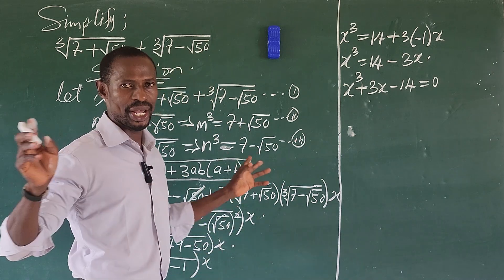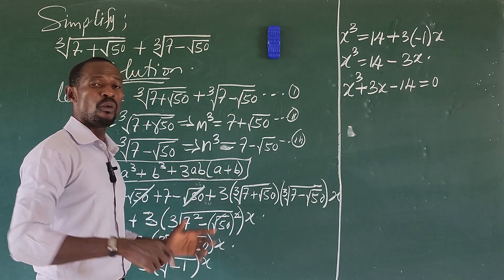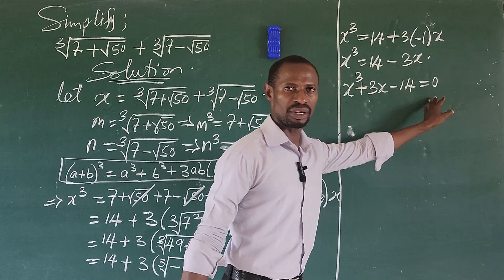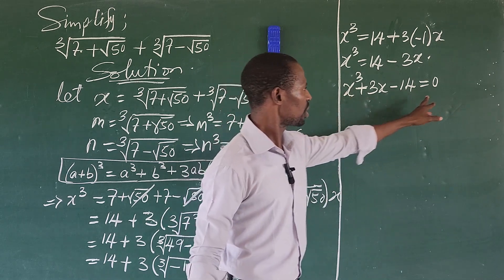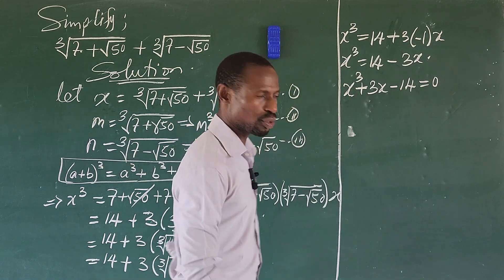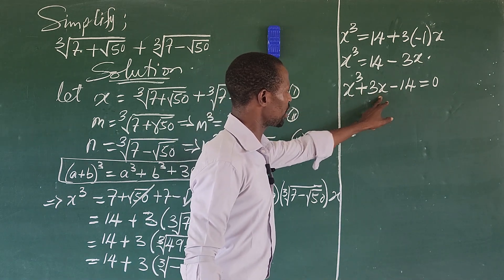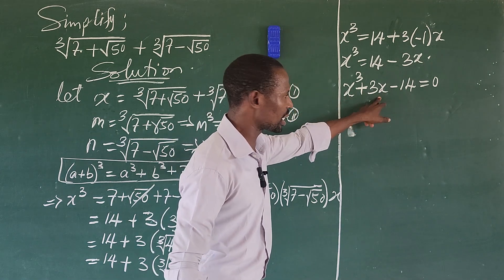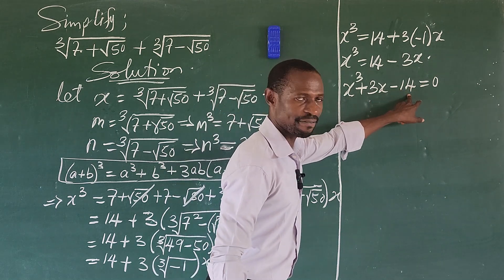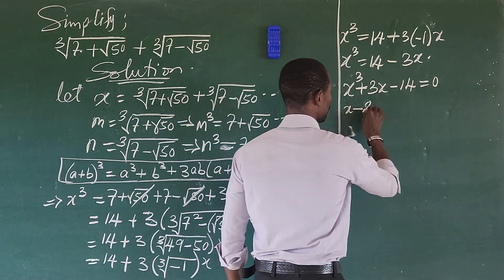We use the trial-and-error method. Substituting x = 1: doesn't give zero. x = −1: doesn't give zero. x = −2: doesn't give zero. But x = 2: 8 + 6 − 14 = 0. So (x − 2) = 0 is one factor of this cubic equation.